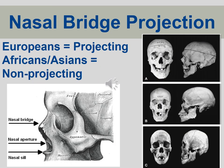Starting with nasal bridge projection: what we typically notice is that Europeans oftentimes have the greatest projection of their nasal bridge. The nasal bridge refers to the most anterior aspect of the nasal bones. Remember that you do have a bony nose — most of it is cartilage, but you can feel on your nose where you have the most anterior projection in that dimension of the nasal bones. You can see a chart showing the components of the nasal bridge, nasal aperture, and nasal sill, so now you know where those landmarks are as we begin discussing them.